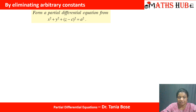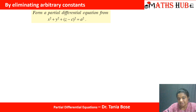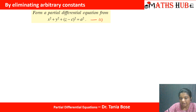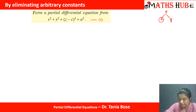For Method 1 — eliminating arbitrary constants — consider the equation x² + y² + (z − c)² = a², which is the equation of a sphere where c is the arbitrary constant and a is the radius. To frame the PDE, differentiate this equation with respect to x, keeping y constant so its derivative is zero.